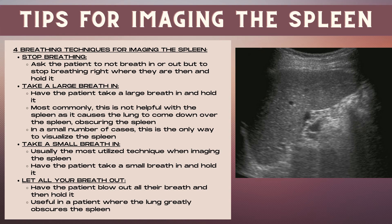Now let's talk about breathing techniques that can help when imaging the spleen. There are four techniques. The first is stop breathing — ask the patient to simply stop breathing and hold, neither inhaling nor exhaling. Since the spleen is so close to the lungs, as the patient breathes in and out, the lungs can come down over the splenic parenchyma and obscure portions or all of the spleen. The second technique is to have the patient take a large breath in and hold. Most commonly this is not helpful as it causes the lung to come down over the spleen, though in a small number of cases it's the only way to visualize the spleen.